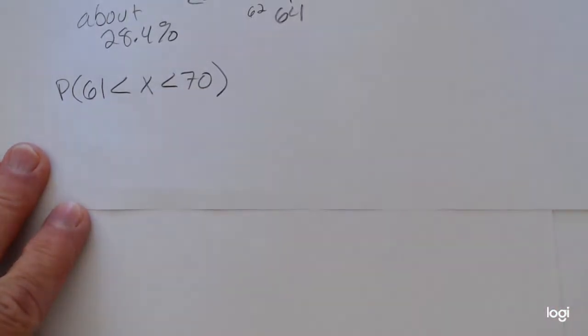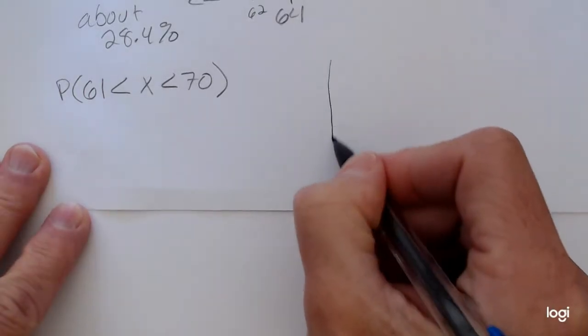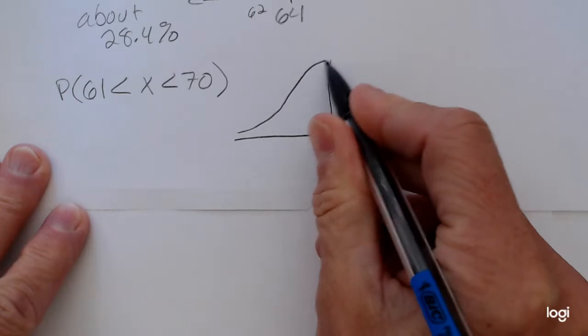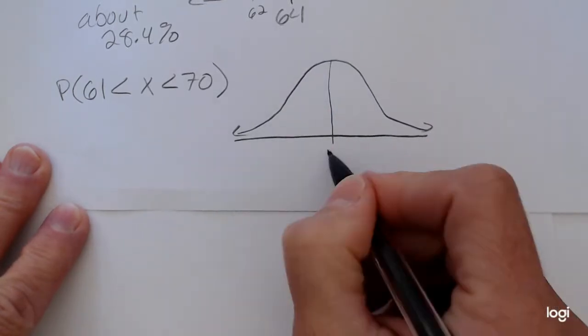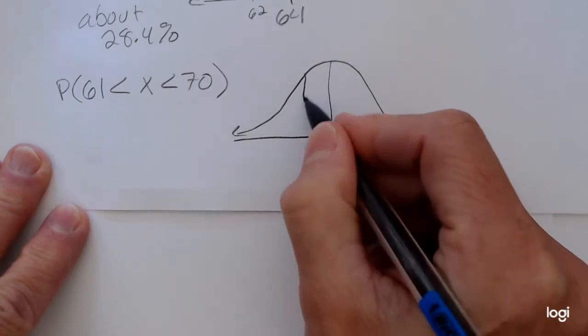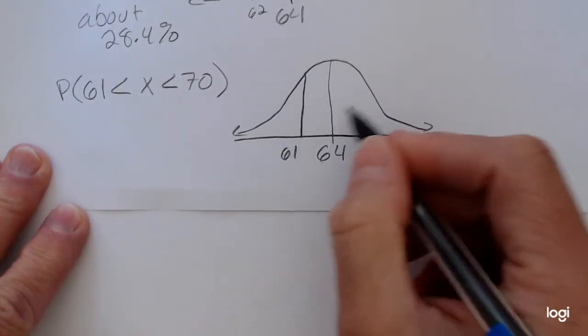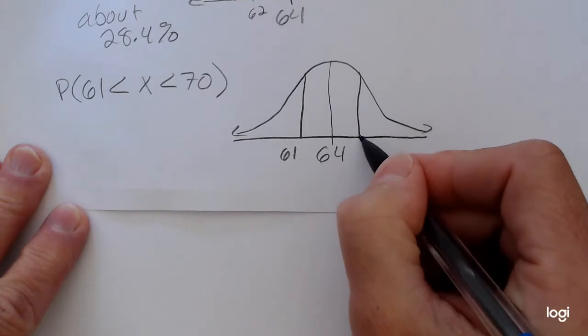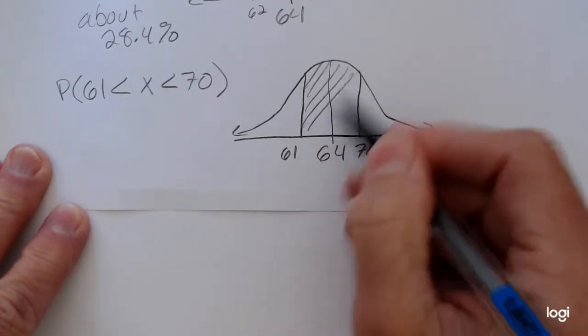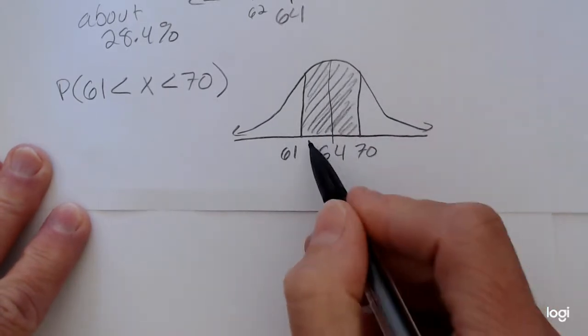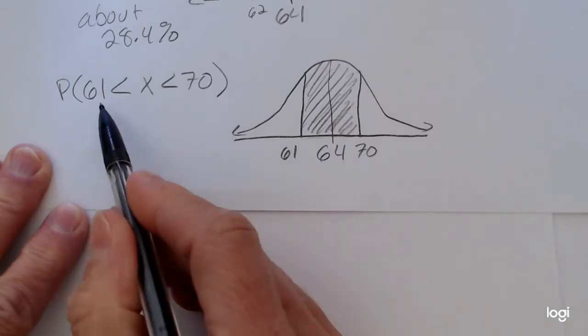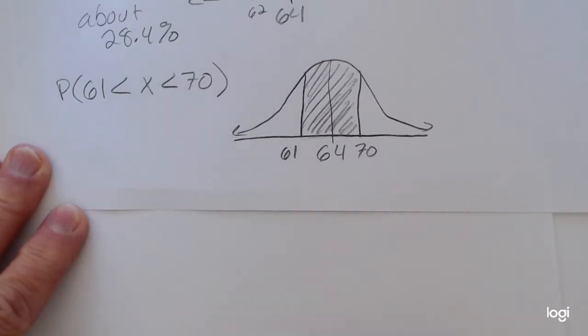I have a between case. Again, I want to sketch what's given. I have a mean of 64. I'm starting at 61 and I'm stopping at 70, and 70 is above the mean. And then I want to shade in between there because all of these x values here satisfy the condition of being both greater than 61 and less than 70 at the same time.